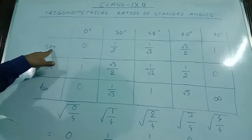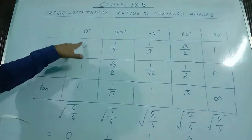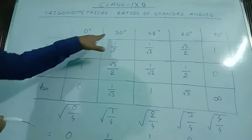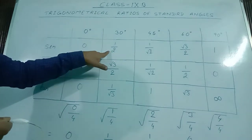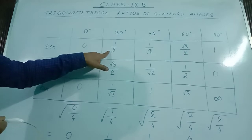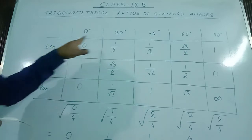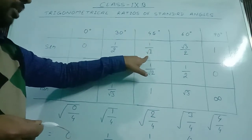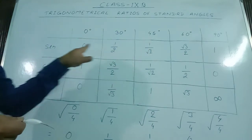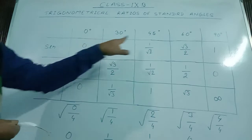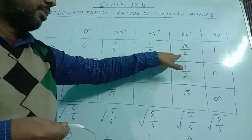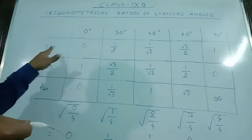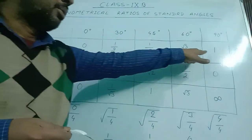Regarding sin: the value of sin 0° is 0, sin 30° is 1/2, sin 45° is 1/√2, sin 60° is √3/2, and sin 90° is 1.